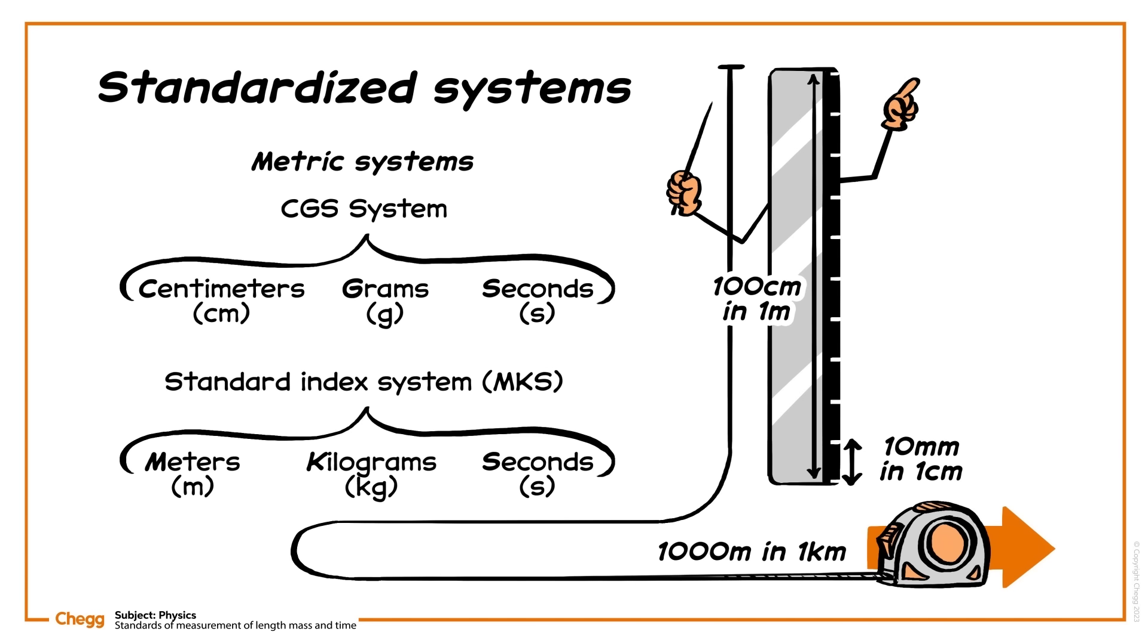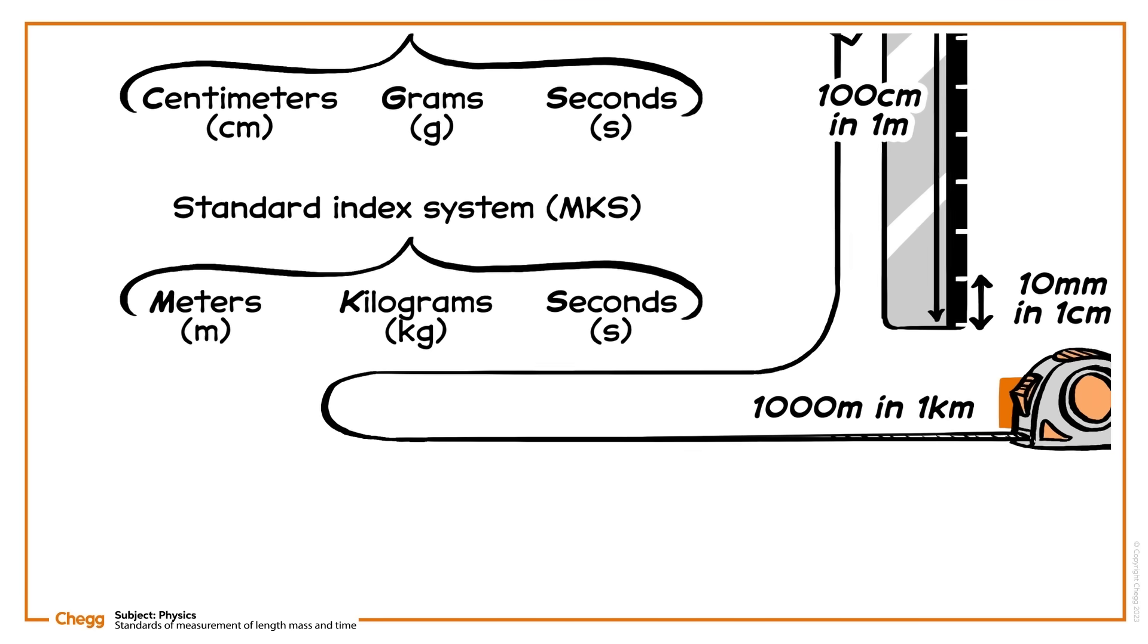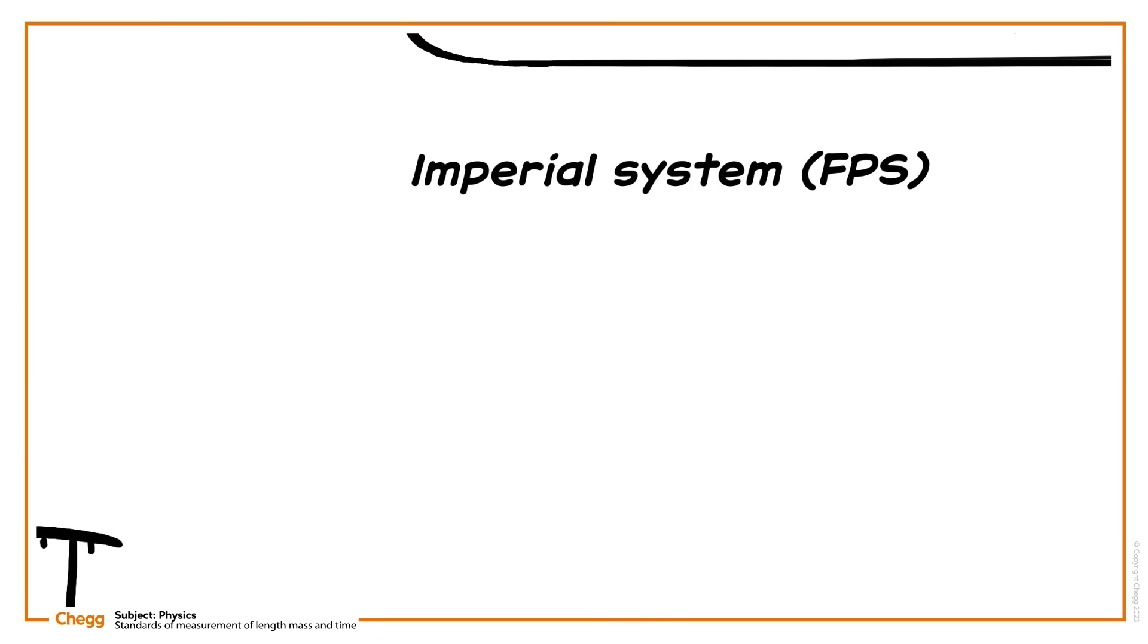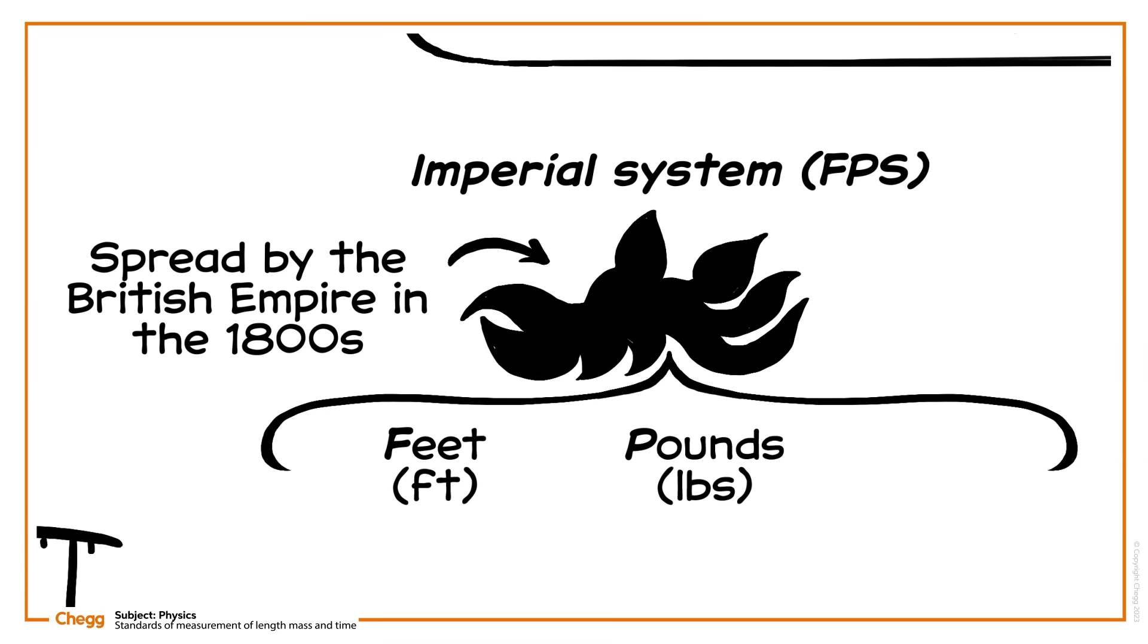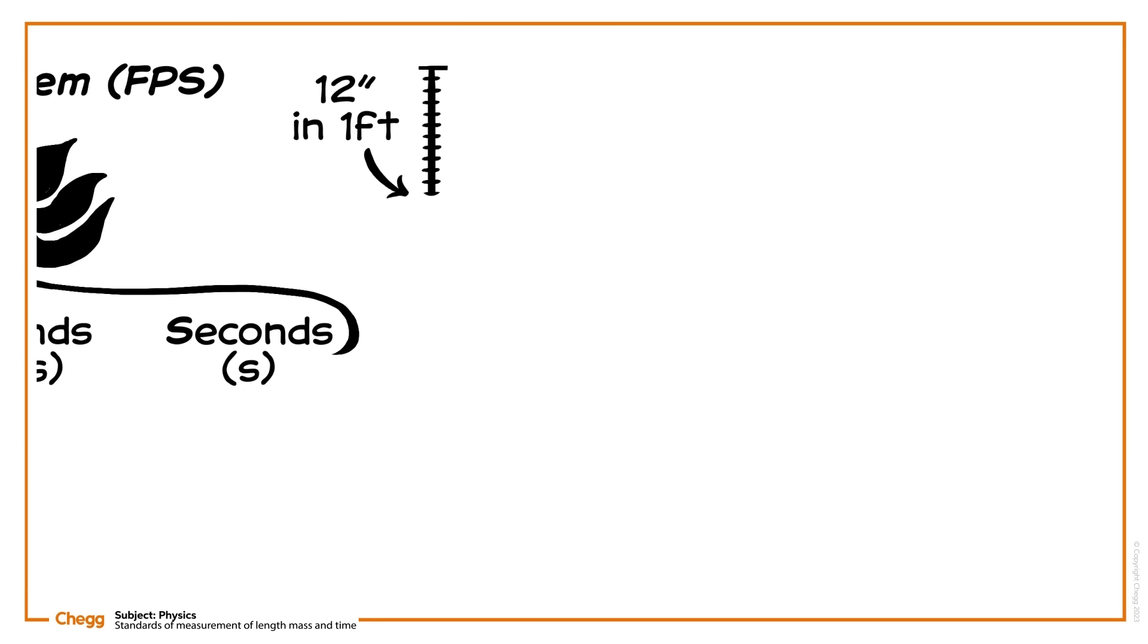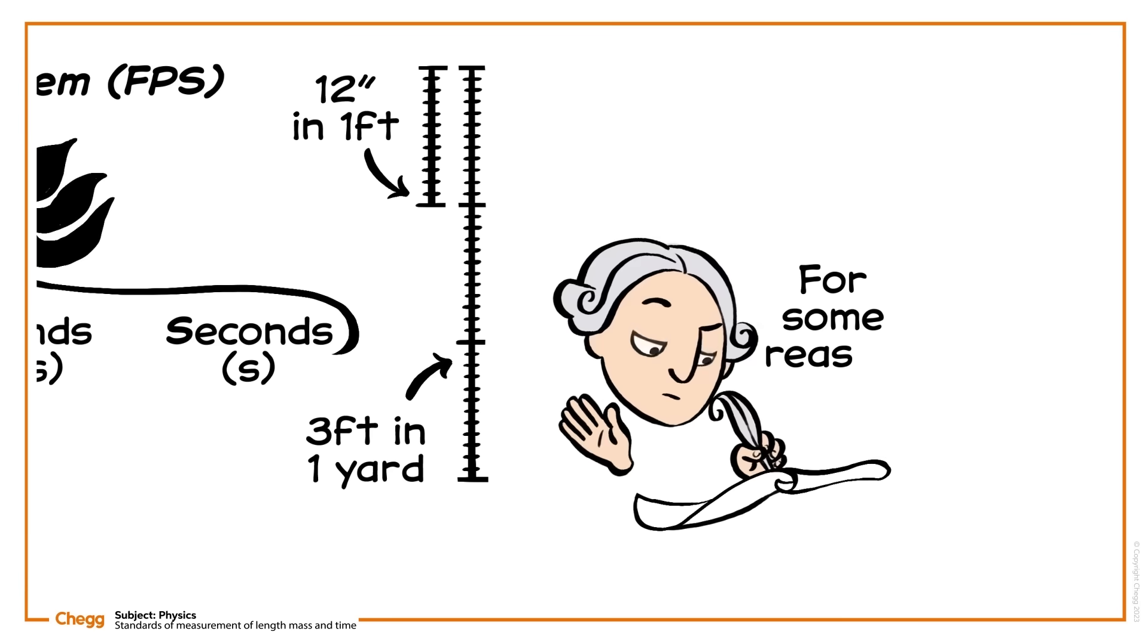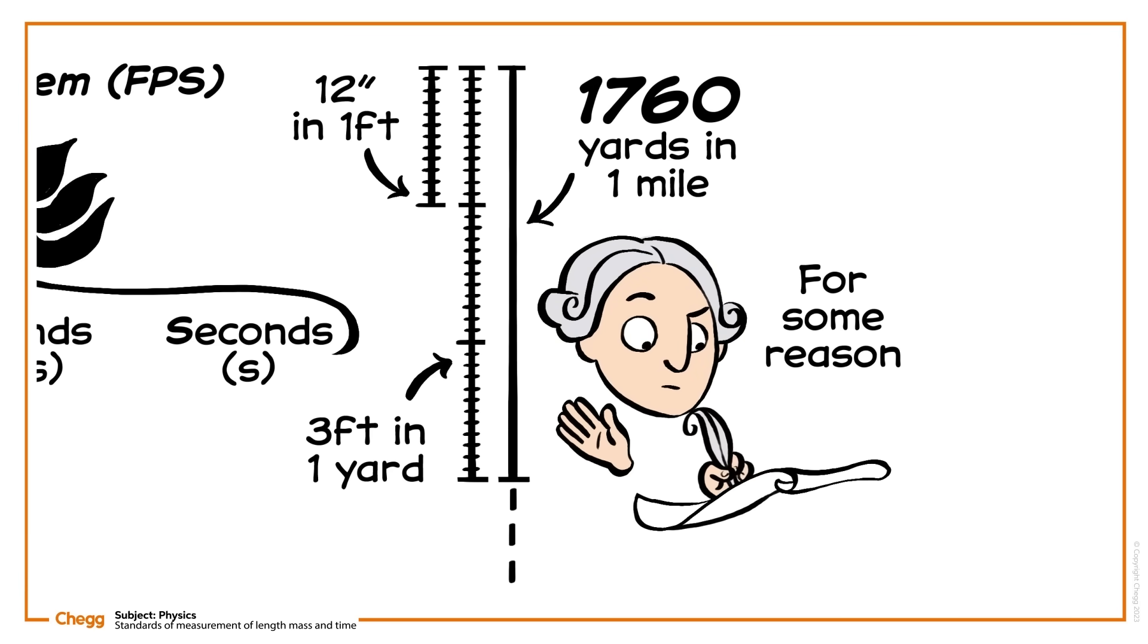The other main system, which only really remains in common use in the USA and Great Britain, is the FPS system, otherwise known as imperial. It's called this because it was defined and spread by the British Empire in the 1800s. The main units of measurement here are feet, pounds, and seconds. This doesn't often use powers of ten, but instead usually multiples of three. 12 inches in a foot, 3 feet in a yard, and for some reason 1,760 yards in a mile.